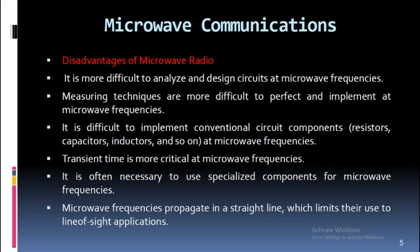Disadvantages of microwave radio: It is more difficult to analyze and design circuits at microwave frequencies. Measuring techniques are more difficult to perfect and implement. It is difficult to implement conventional circuit components — resistors, capacitors, inductors, and so on — at microwave frequencies. Transient time is more critical at microwave frequencies, and it is often necessary to use specialized components. Microwave frequencies propagate in a straight line, which limits their use to line-of-sight applications.